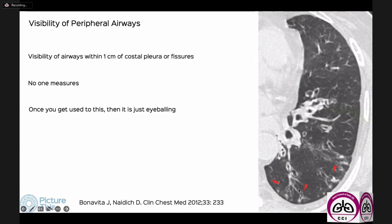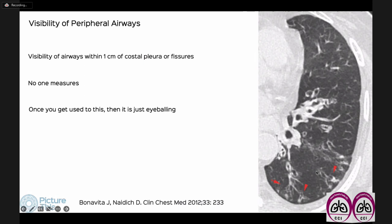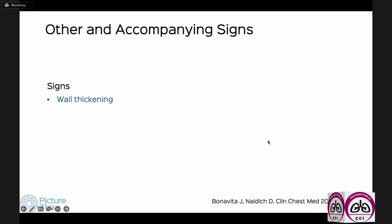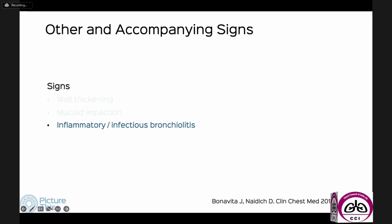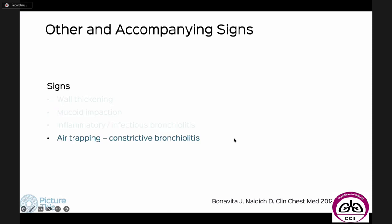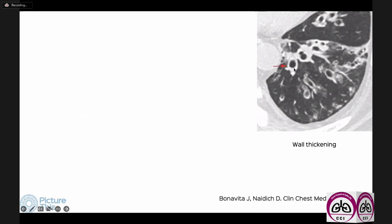Visibility of peripheral airways in the last two centimeters of the lungs is also a sign of bronchiectasis — you'd only measure this in a study or trial, not in clinical practice. Secondary signs include wall thickening, mucoid impaction, and associated tree-and-bud, which we define as inflammatory or infectious bronchiolitis, and associated air trapping or constrictive bronchiolitis, which we'll cover under small airways disease.